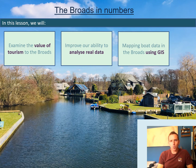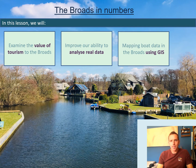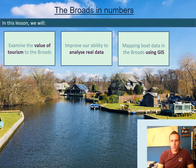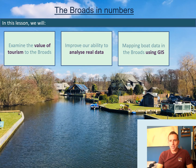We're going to physically try to work out, using actual real data, just how important tourism is to the Broads. When you have data, one of the important things is to be able to interpret and analyze it properly and accurately - that's our second challenge. Thirdly, today we're going to be experimenting with something called GIS, or Geographical Information Systems, and we're going to be mapping that data on an actual map of the Broads.